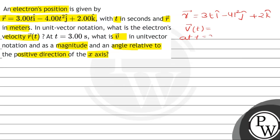At time t equals 3 seconds, for part b, we have to find the velocity vector value and its magnitude. In part c, we have to find the angle this velocity vector makes with the x-axis at t equals 3 seconds. This is part a, this is part b.